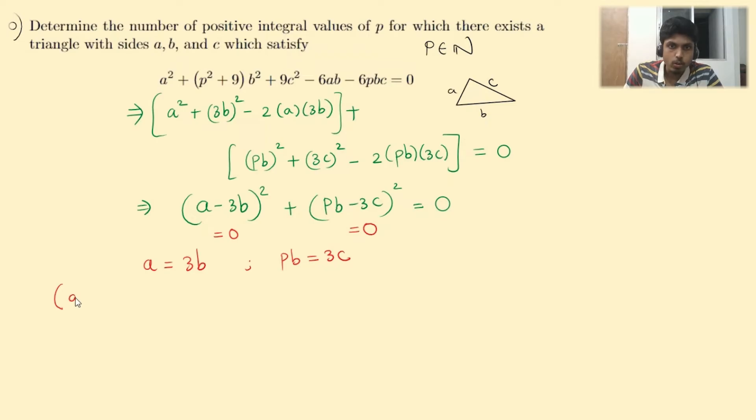So each of them individually must be 0 making a equal to 3b and pb equal to 3c. So this leads to writing the triplet of sides just in terms of one variable. So let's write everything in terms of b. So you get a equals 3b and b equals b and c equals pb upon 3.